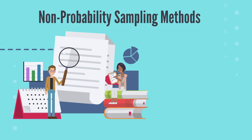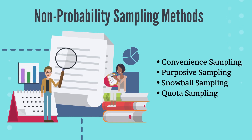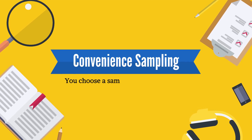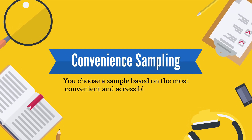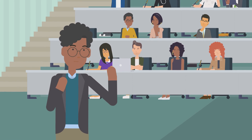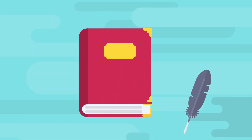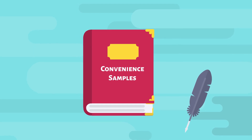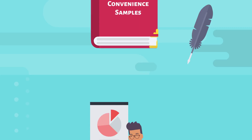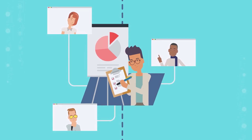Non-probability sampling methods include convenience sampling, purposive sampling, snowball sampling, and quota sampling. In convenience sampling, you choose a sample based on the most convenient and accessible members of the population. For example, in one study, the subjects were first-year psychology students at the researchers' university. For practical reasons, many studies end up relying on convenience samples, but it is important to be aware of the limitations and carefully consider potential biases. You should always make an effort to gather a sample that is as representative as possible of the population.